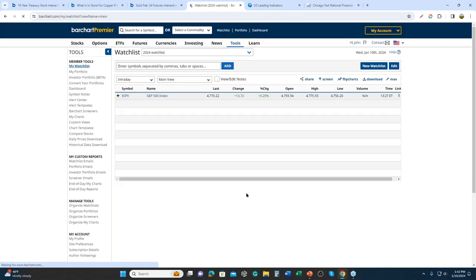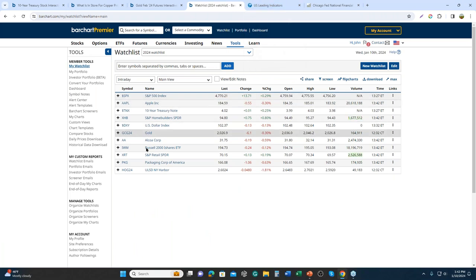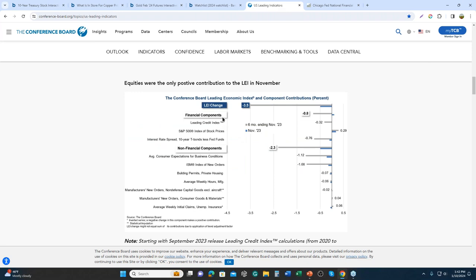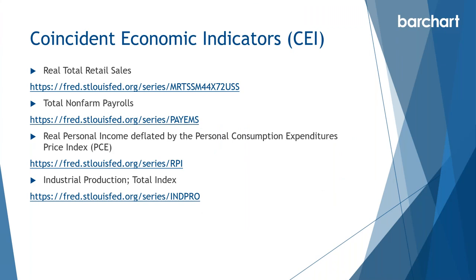So where are we? Right on time. Let's go back to our watch list. What we've basically done with these 11 symbols is turn all of these leading and coincident economic indicators into a symbol — one we can find on Bar Chart — and ones that we can watch, not necessarily trade or invest in, but to derive information based on price.